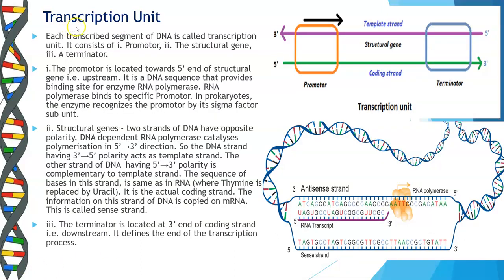For the process of transcription you require a transcription unit. Each transcribed segment of the DNA is called a transcription unit. It consists of a promoter region, the structural gene and a terminator. The promoter is located towards the 5' end of the structural gene, that is upstream. It is a DNA sequence that provides a binding site for the enzyme RNA polymerase. In prokaryotes, the enzyme recognizes the promoter region by its sigma factor subunits.